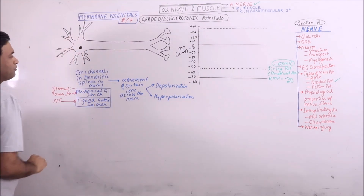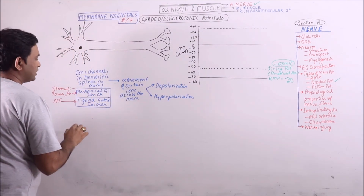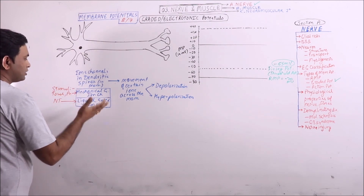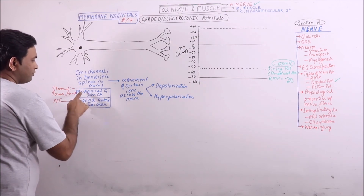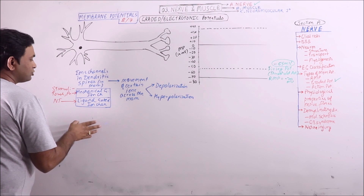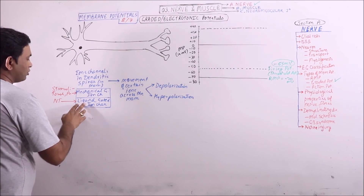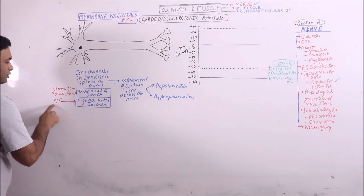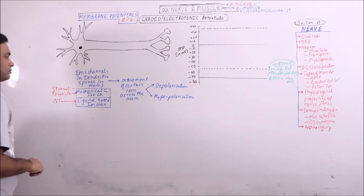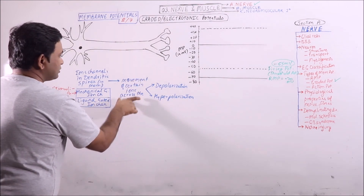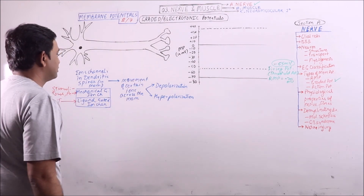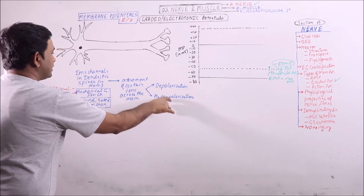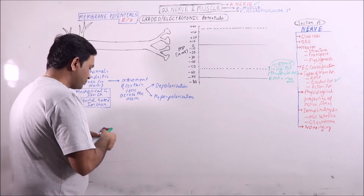This is the receptive part. It is having two types of ion channels. It will be stimulated either by touch or pressure if it is a sensory neuron, and if it is not a sensory neuron then it will be stimulated by certain ligands like neurotransmitters. Finally, some ionic movement will occur which will result in depolarization or hyperpolarization.